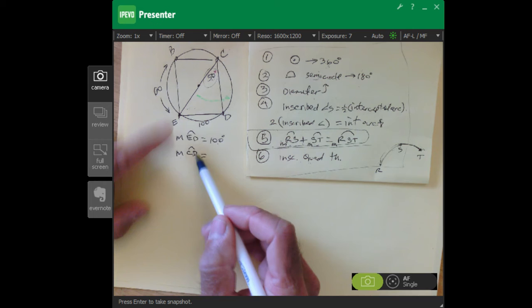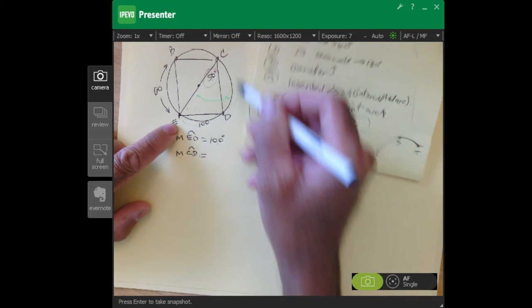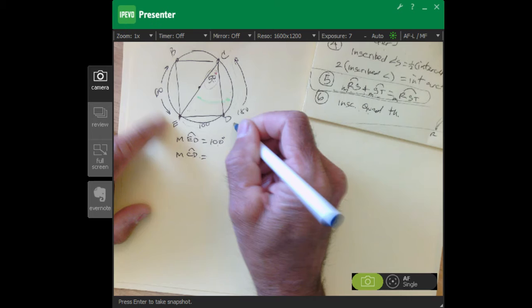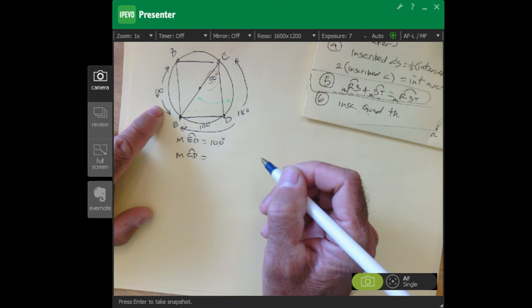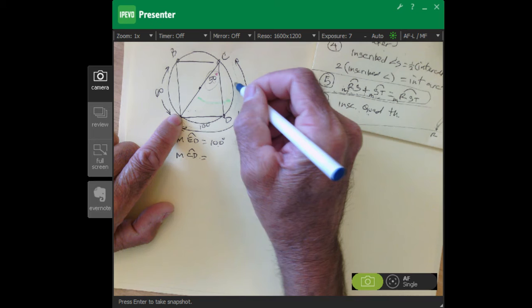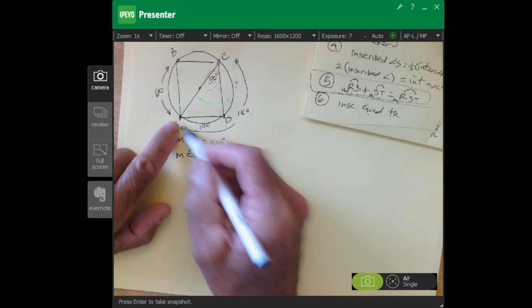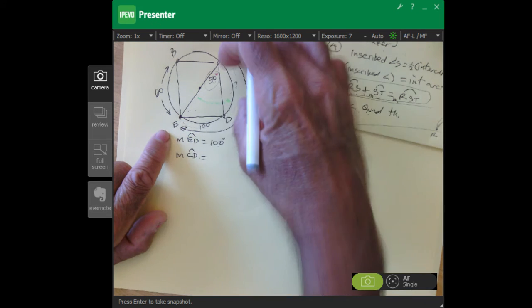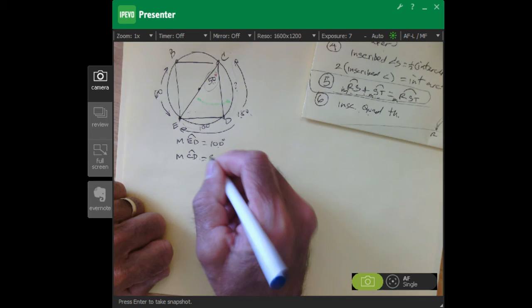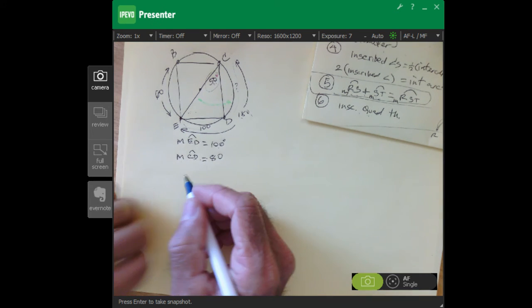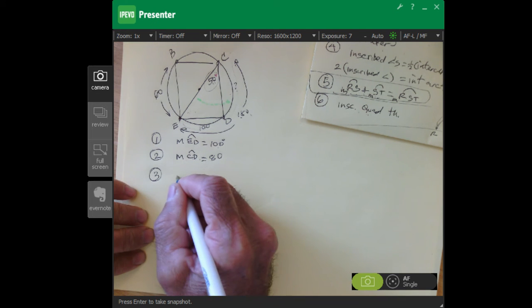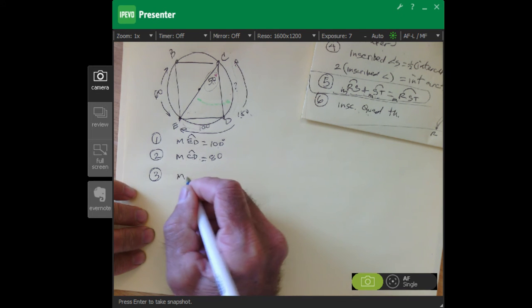I'm going to go through this one a little quicker. From the last one we got CD. We used the whole semi-circle which was 180, and we know that 100 plus whatever goes here has to be equal to that by the arc addition postulate. So that's 180, that's 100, which makes this 80.